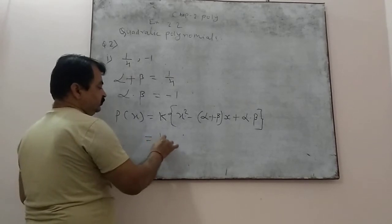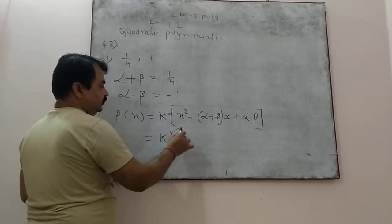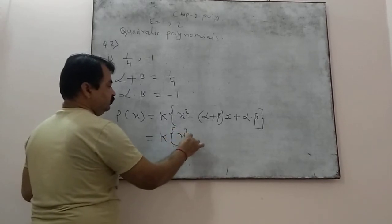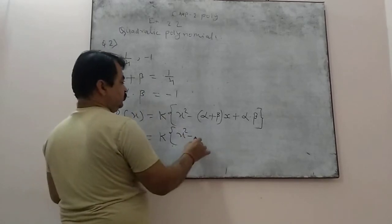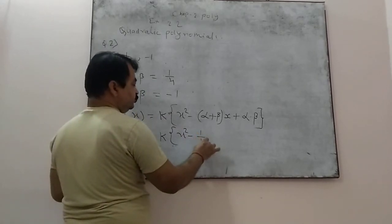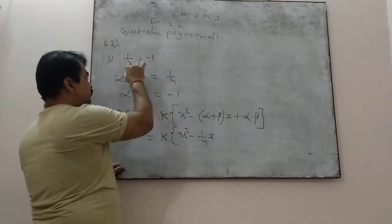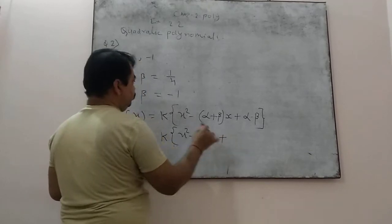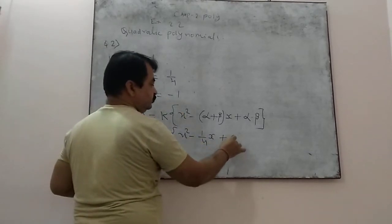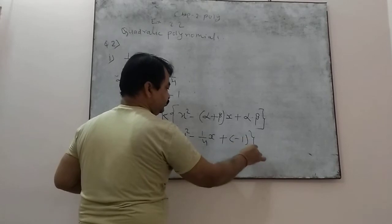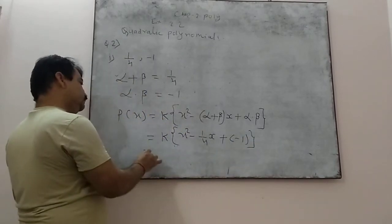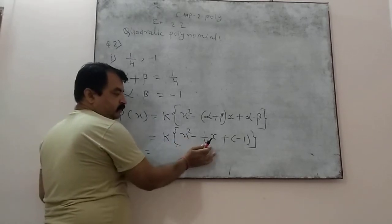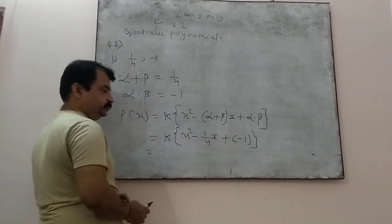Simply put in the values and you will get your answer. We write x squared minus — the first value, sum of zeros, is 1/4 — so alpha plus beta is replaced by 1/4, giving us x squared minus (1/4)x, plus alpha into beta, which is given as minus 1. So we get x squared minus (1/4)x plus (minus 1).